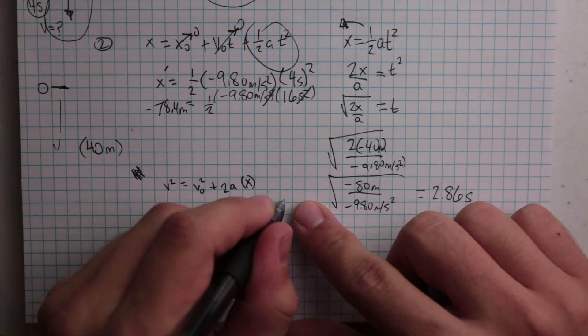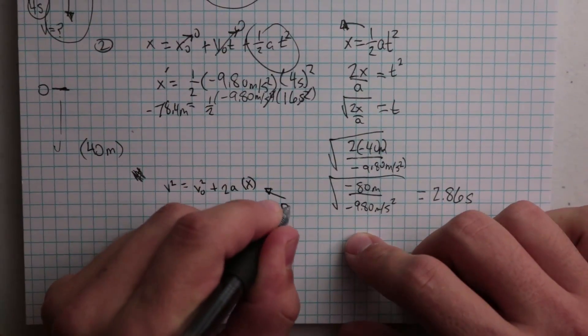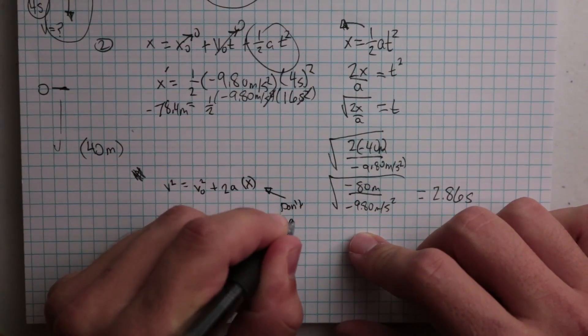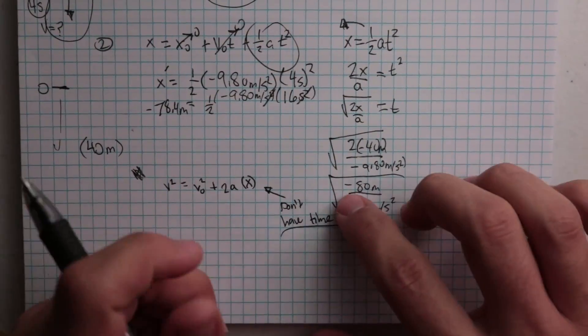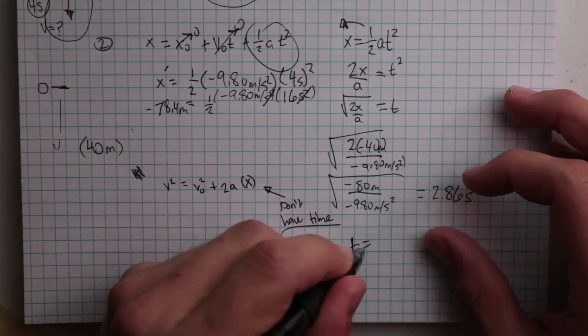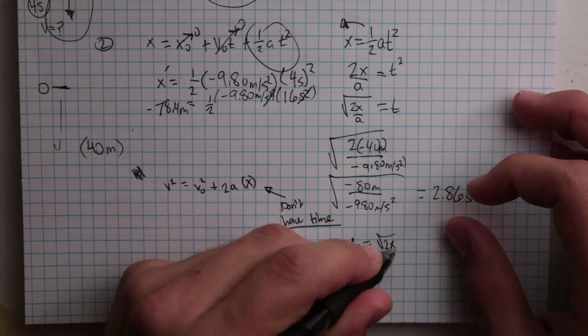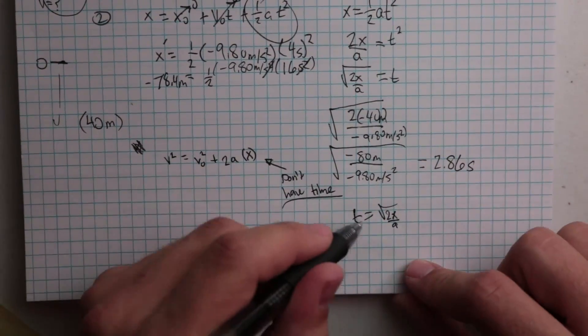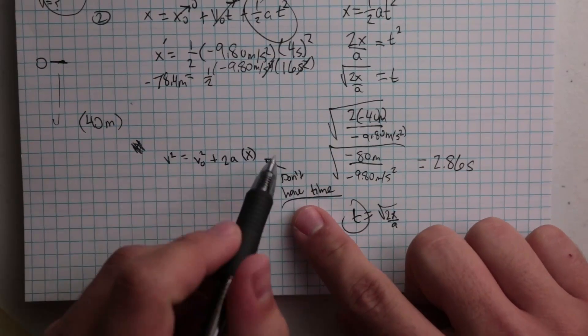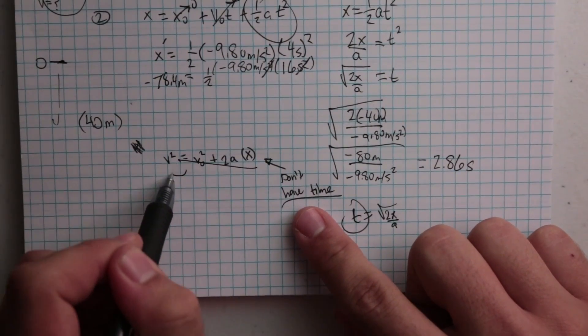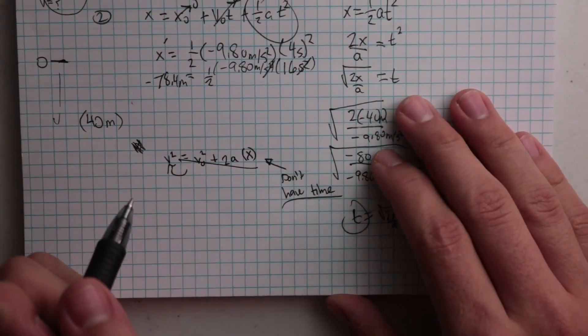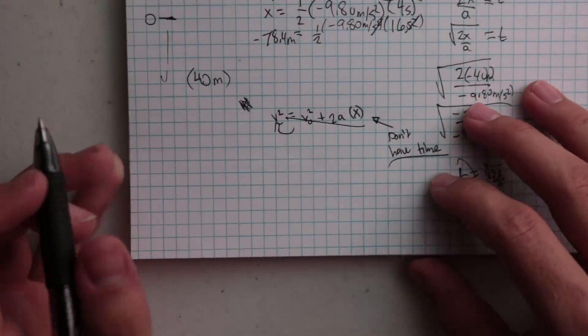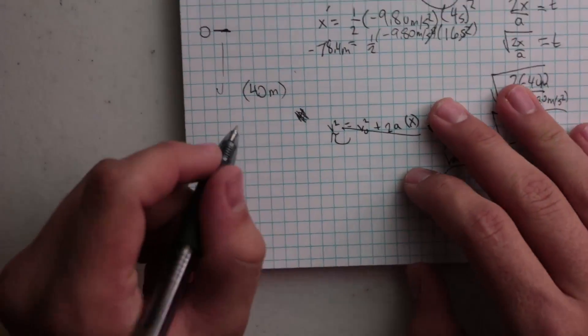have time. And if you don't have time, you could find time using t equals root 2x over a, but then you have a calculated time. If you could use this to get your velocity, that is much more preferable than using a calculated value in your equation to find a solution. So let's do one real quick.